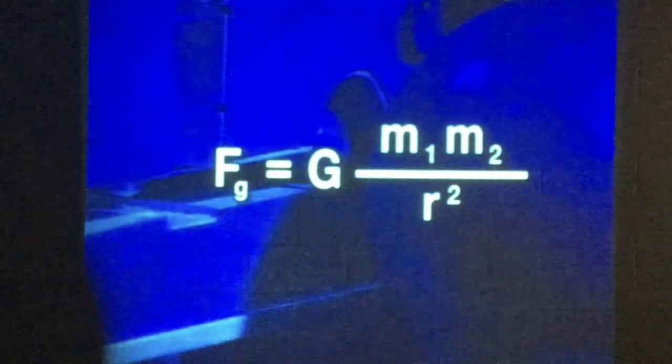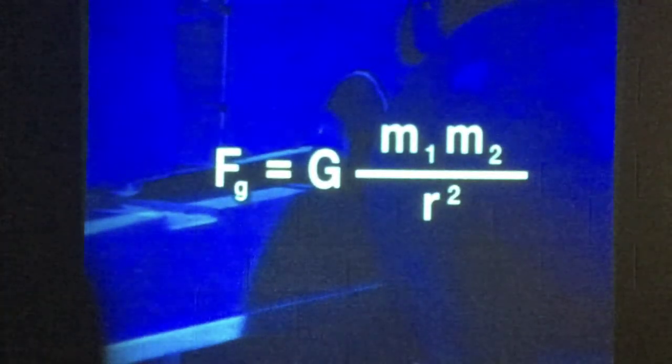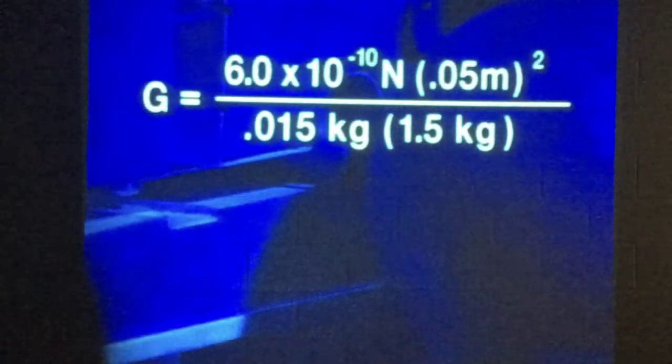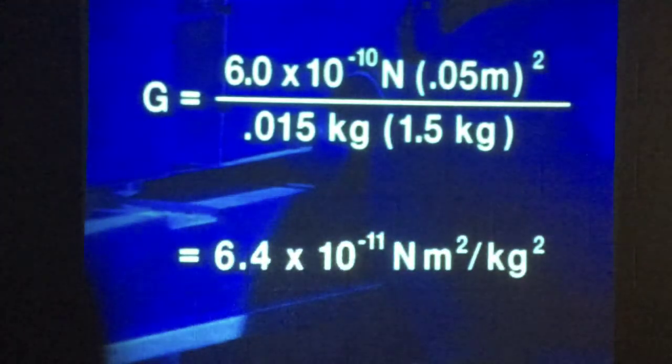Using Newton's law of universal gravitation and the known values for the masses and distance of separation, the calculated value of the universal gravitation constant is 6.4 times 10 to the minus 11 Newton meters squared per kilogram squared, which corresponds well to the accepted value for the gravitational constant.